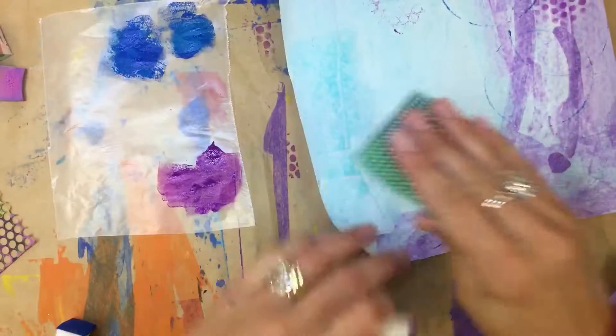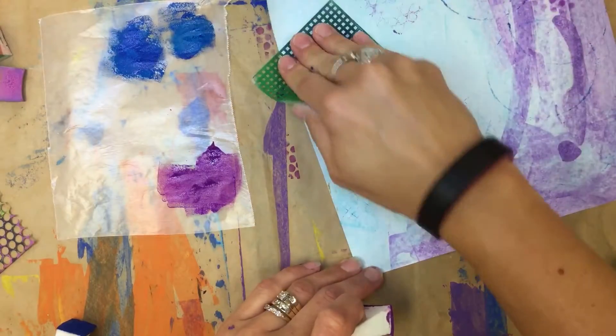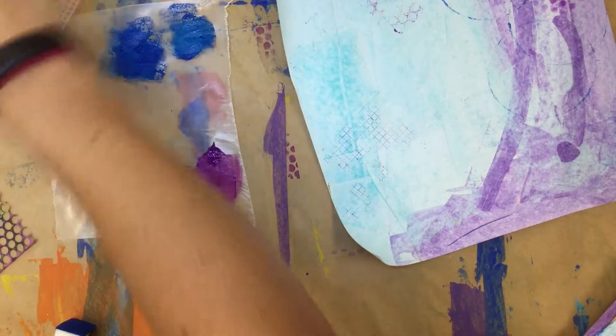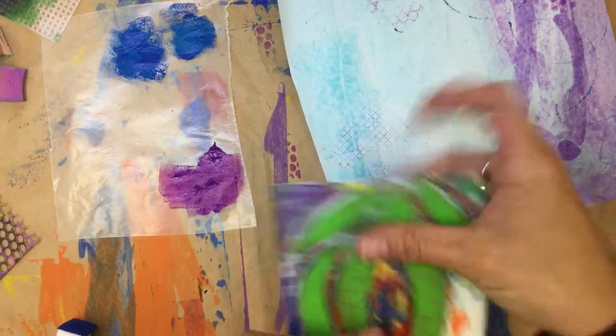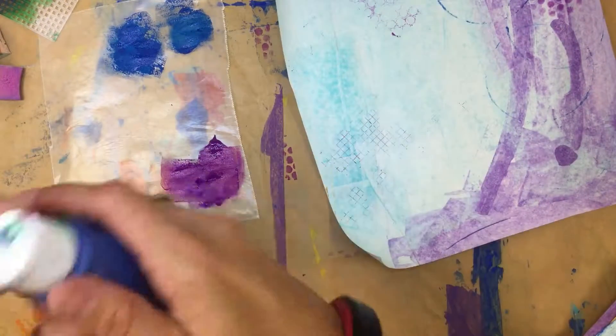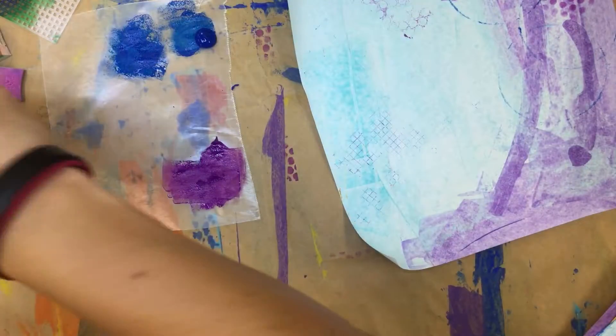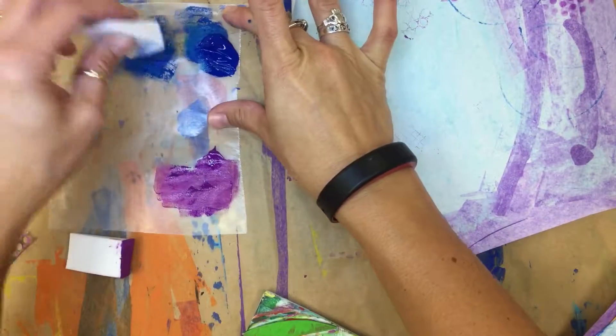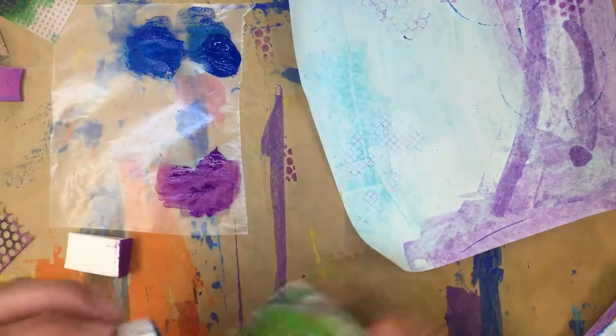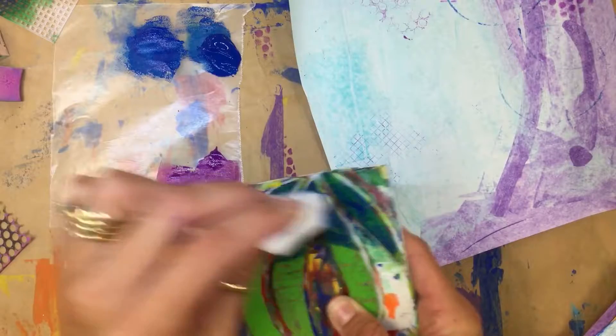We'll move over here—different textures on there. I have some handmade stamps, same type of thing. Switch back over to the blue. Okay, just a small amount of paint again, about the size of a dime. I'm going to put some on here and then dab it off to the side.